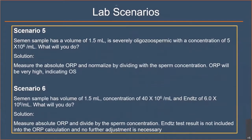Scenario five: the sample is severely oligospermic with a concentration of 5 million per ml. We measure the absolute ORP and normalize it by dividing by the sperm concentration. In this situation, the ORP will be very high, indicating the presence of oxidative stress. Scenario six: volume 1.5 ml, concentration 40 million per ml, and presence of white blood cells at 6 million per ml. We measure ORP and divide it by the sperm concentration. The white blood cell count is not included in the calculation, so no further adjustment is necessary.